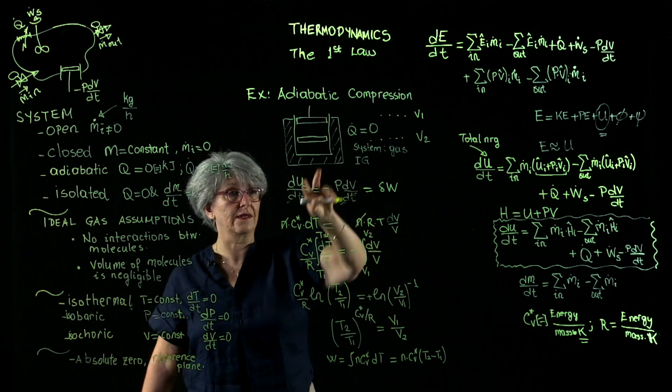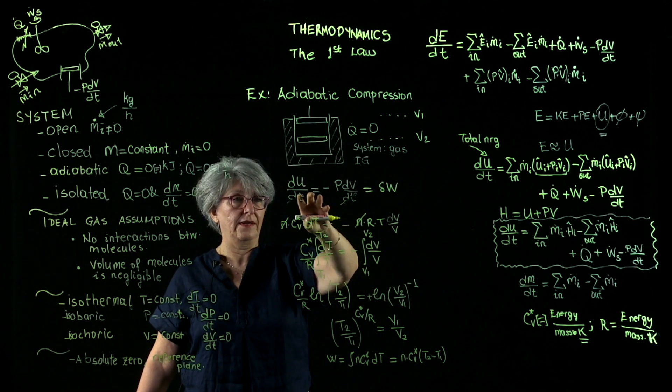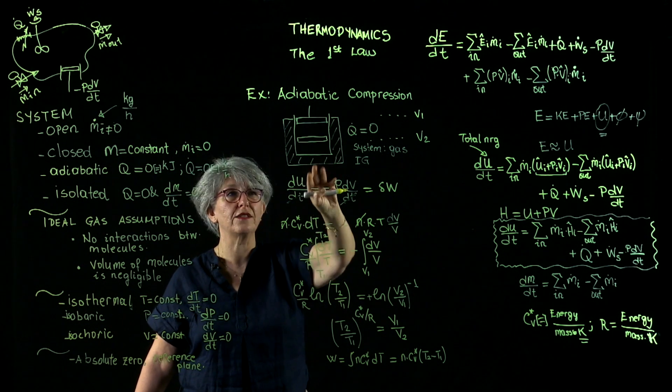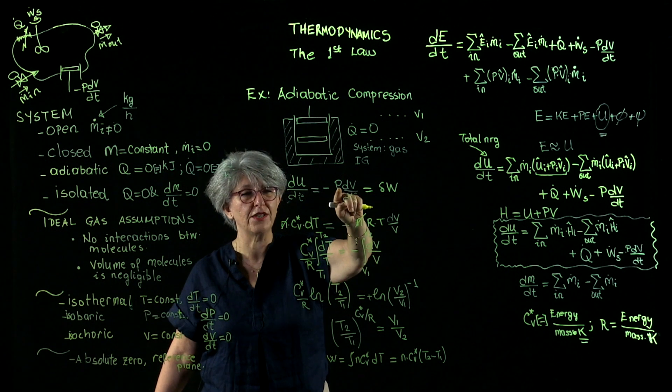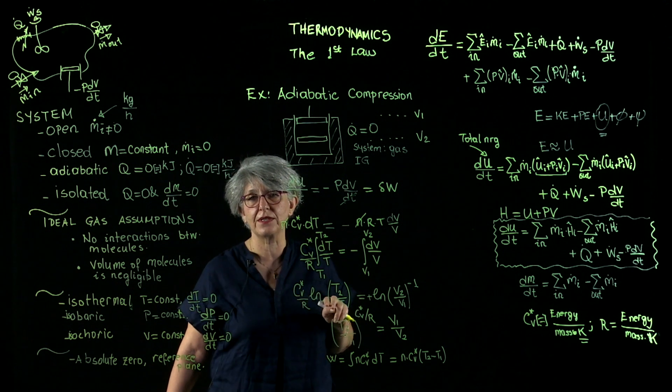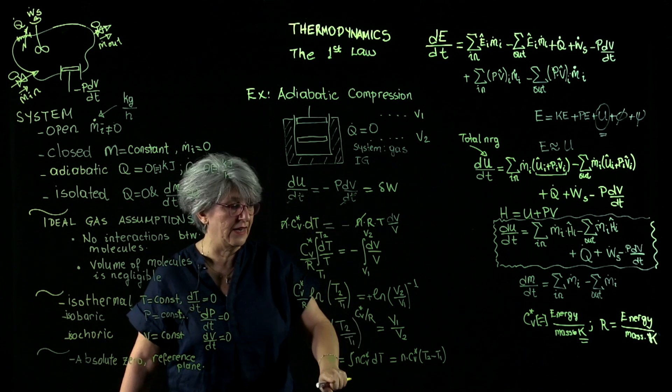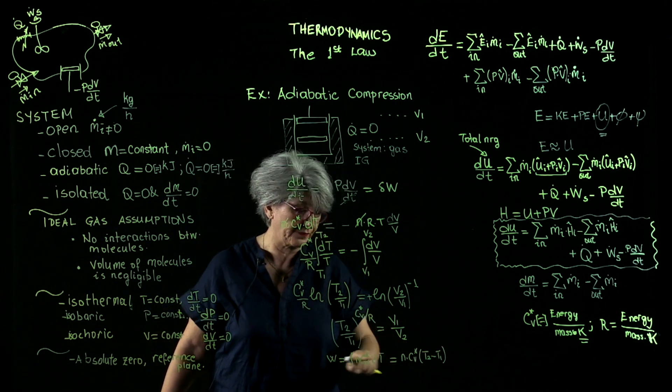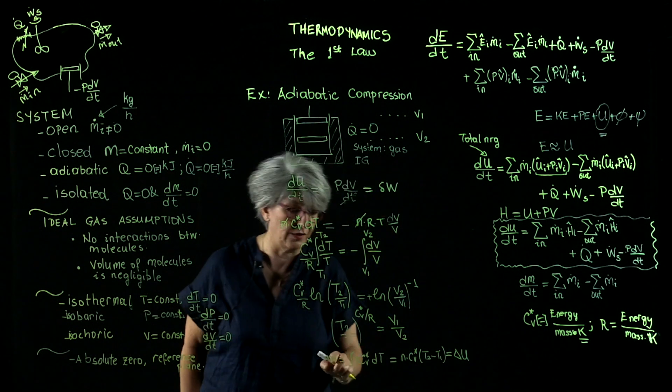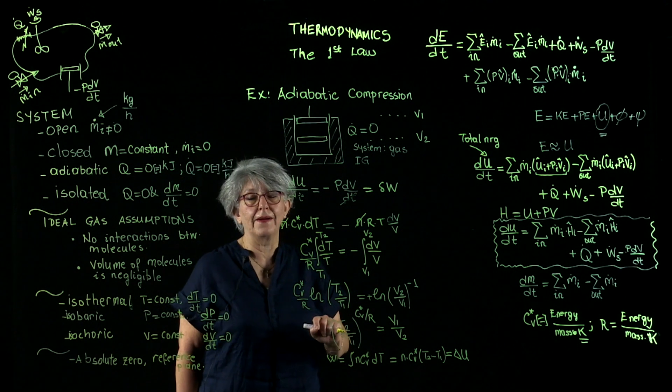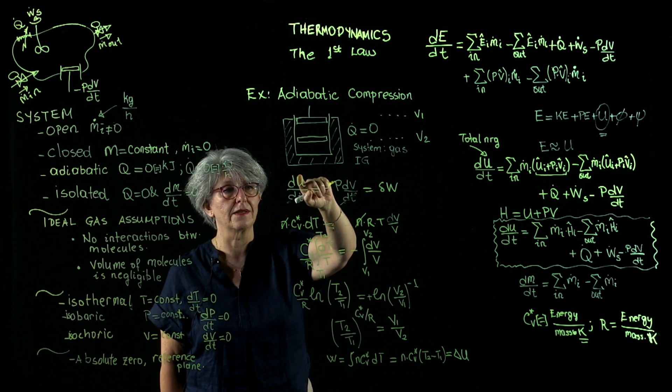I started from the first law. I eliminated the terms that I did not need. I ended up with this equation that is pertinent to my situation. I had to substitute the ideal gas law for pressure and the relationship between the internal energy and the gas temperature here in order to obtain an equation for temperature. Now, I used this equation for temperature to calculate the internal energy change, which is equal to the work done on the gas.